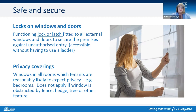In relation to privacy coverings, windows in all rooms which the tenant reasonably expects privacy — such as bedrooms and bathrooms — require privacy coverings. These could be a curtain, blind, tinting or glass frosting. This doesn't apply if the window is obstructed by a fence, hedge, tree or any other feature.